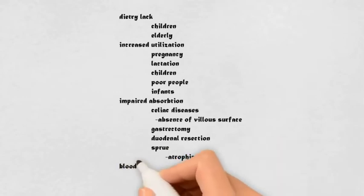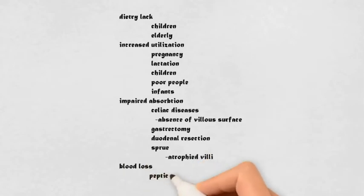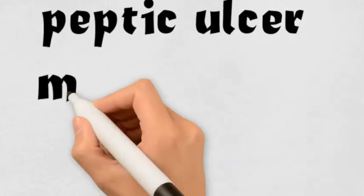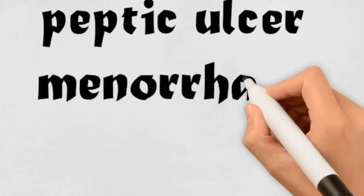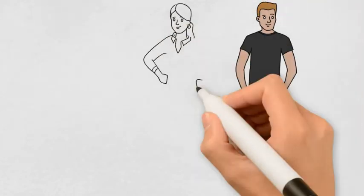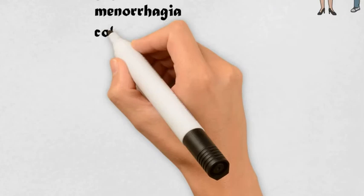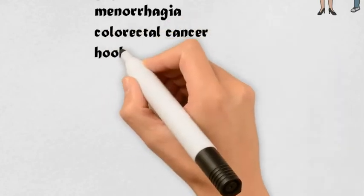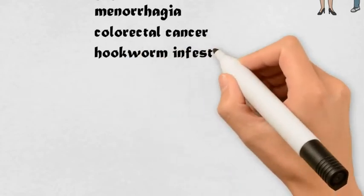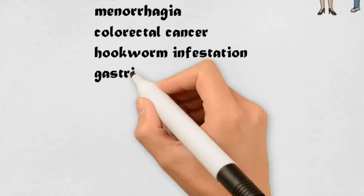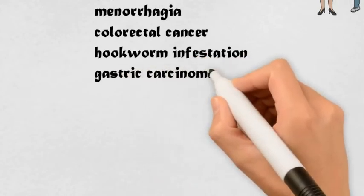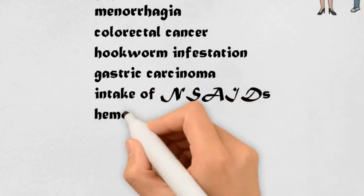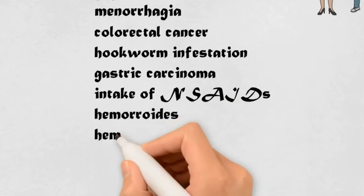Conditions causing blood loss include peptic ulcer, which is common in males, and menorrhagia, which is common in females. Colorectal cancer is cancer of the colon and rectum. Hookworm infestation — the parasites suck blood, causing blood loss. Gastric carcinoma, intake of NSAIDs (painkillers), hemorrhoids, hematuria (blood loss through urine), and hematemesis all cause blood loss.